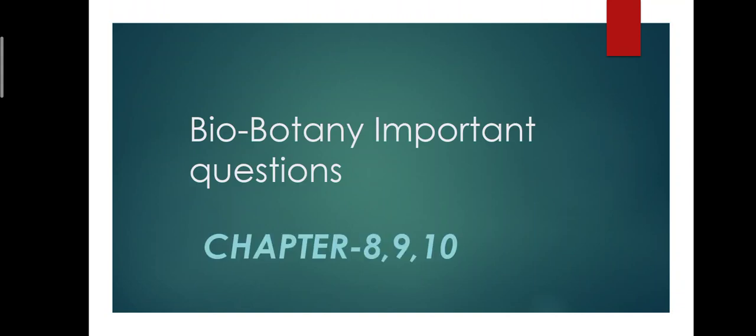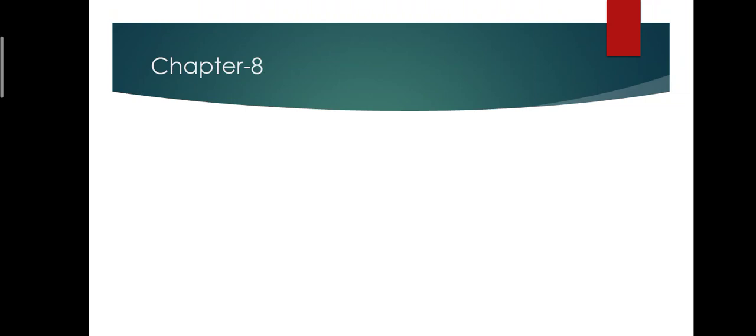Now we are going to talk about chapters 8, 9, and 10. Starting with chapter 8, that is biodiversity and its conservation. First question: greenhouse effect and its diagram. Next, define Dobson unit and ozone hole. That's an important question.